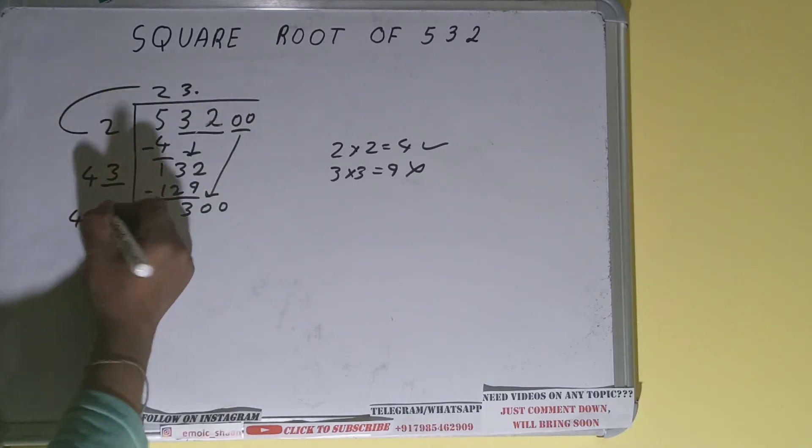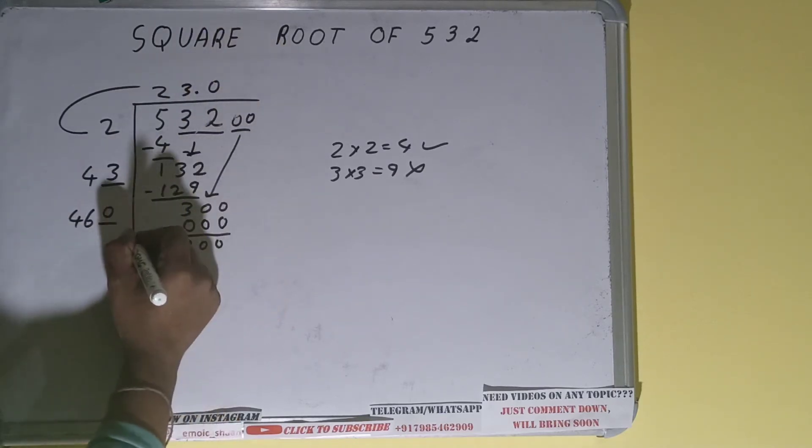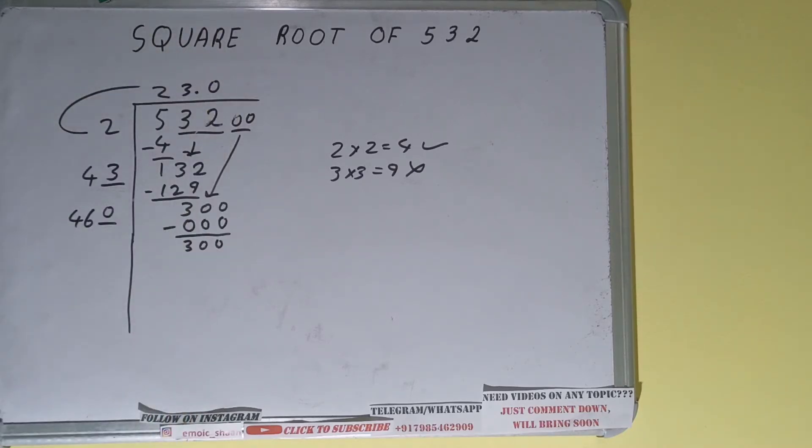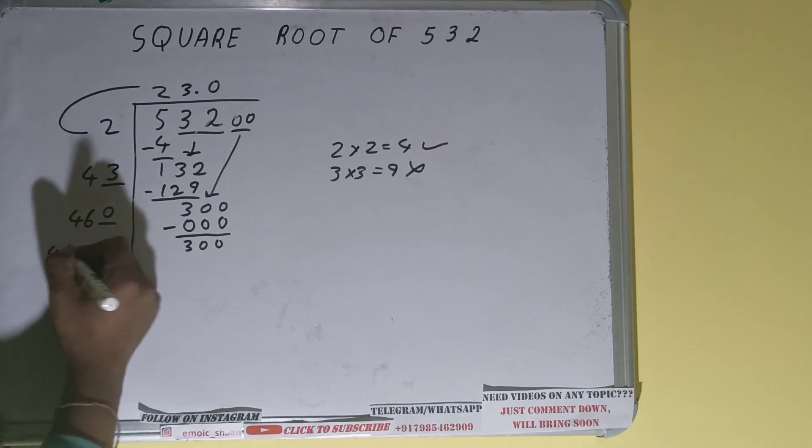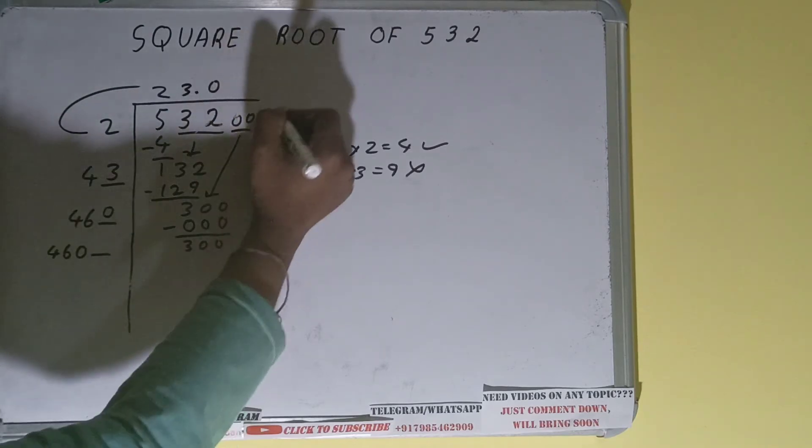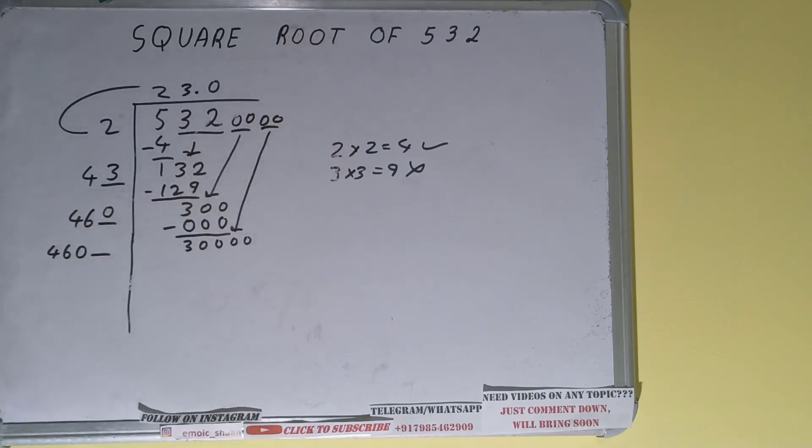Now we will use 0, and on subtraction again number will remain same 300, and this 460 into 0 we did, so add both, so 460 plus 0 will be again 460 but one digit extra, and this number we need to make it big, so bring the next pair of zeros down and number will become as 30,000.